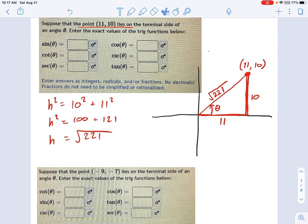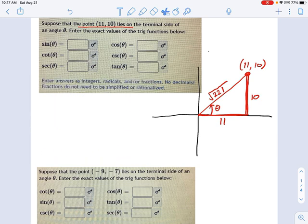Now we have a complete triangle. And the rest of this problem is going to be a snap. So what is sine of theta? Well, sine of theta, if you remember, is just opposite over hypotenuse. So this becomes 10 divided by the square root of 221. Likewise, cosine is going to be 11 divided by the square root of 221. And the tangent would be 10 over 11, opposite over adjacent.